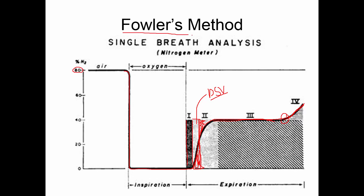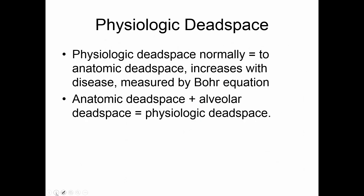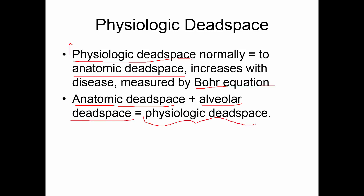Fowler's method tells us about the anatomy of someone's lungs. Physiologic dead space — the air that doesn't exchange gas — is normally equal to anatomic dead space, which is the mouth, nose, and airways. However, with disease, some alveoli can convert to dead space, and in that case physiologic dead space would be greater than anatomical dead space. We can measure physiologic dead space using something called the Bohr equation. Anatomic dead space plus alveolar dead space from the Bohr equation gives us our physiologic dead space.